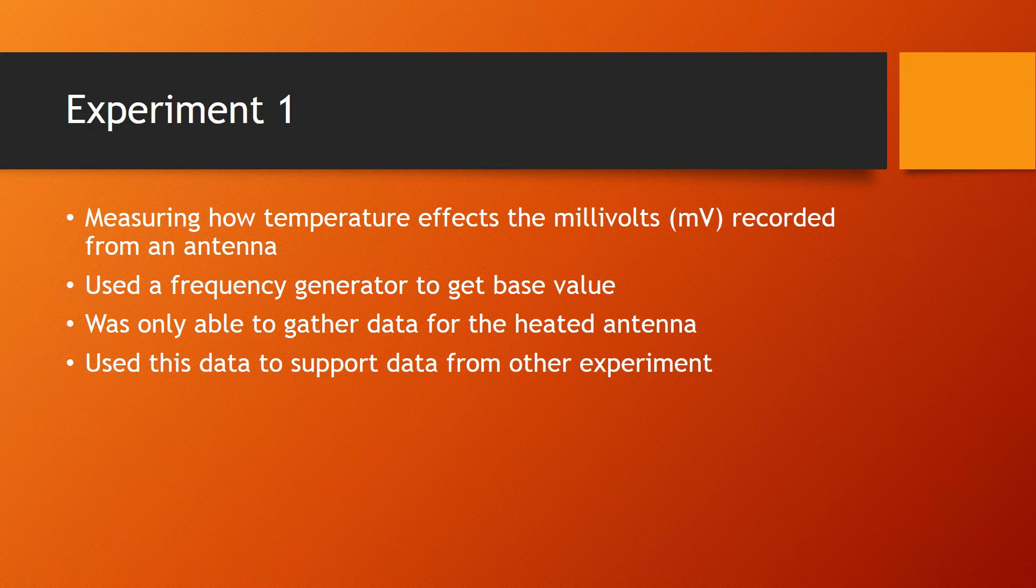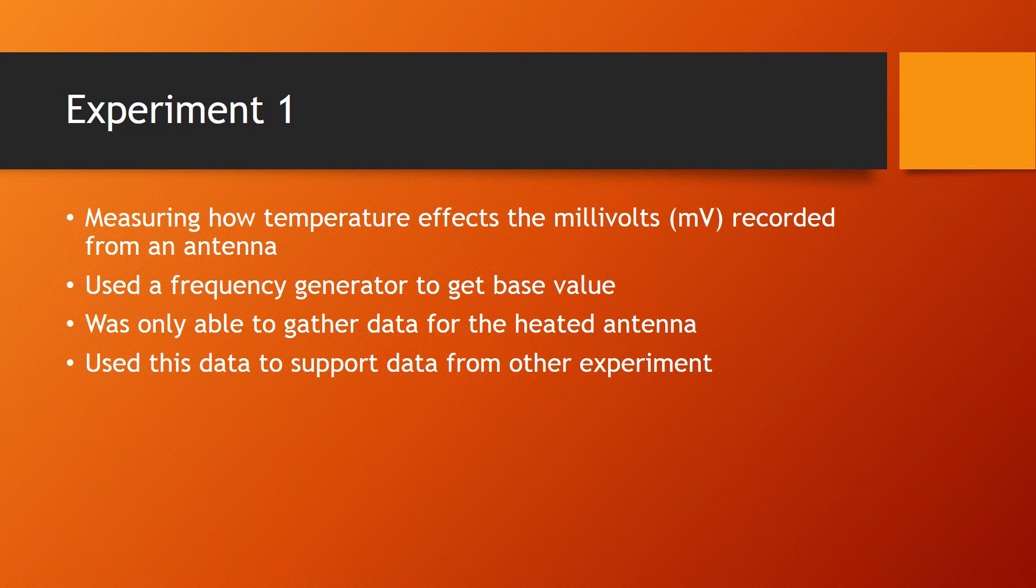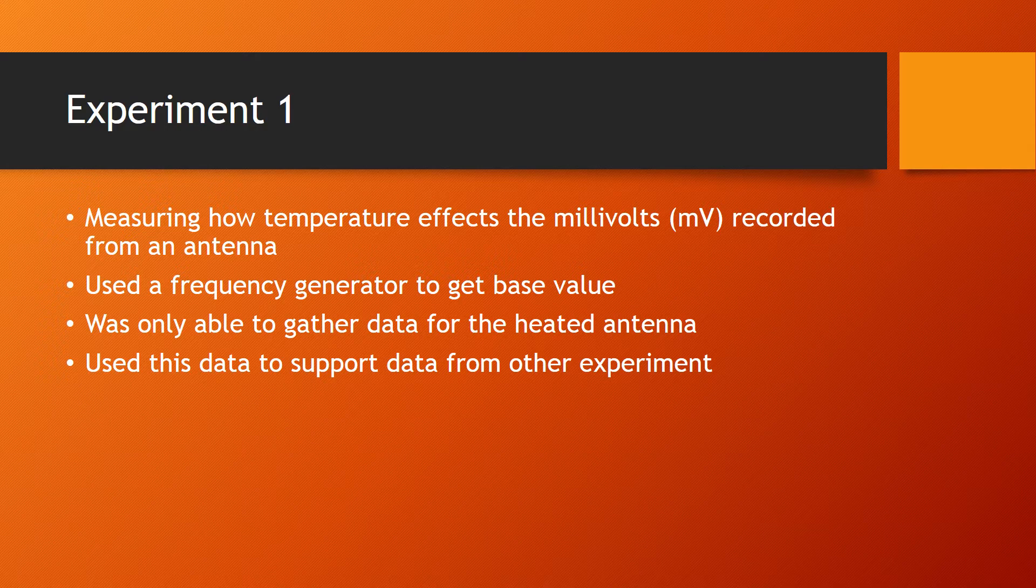My initial experiment was to measure how the change in temperature of the antenna affects the millivolt reading recorded from the antenna. To do this, I used an oscilloscope that I hooked up to the antenna and a frequency generator that I hooked up to the antenna to get a base value. After getting the base value, I heated up the antenna with a Bunsen burner and saw how the change in temperature affected the millivolt reading from the oscilloscope. Due to unforeseen circumstances, I was only able to get data on heating the antenna. However, I did use this data to further support my data I gathered from my other experiment.